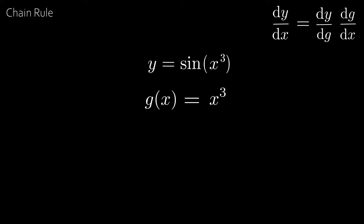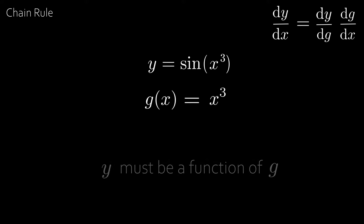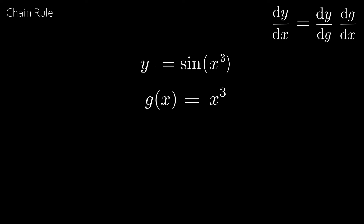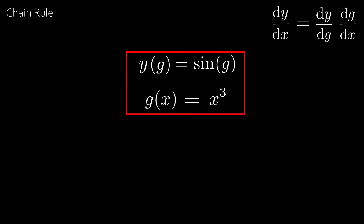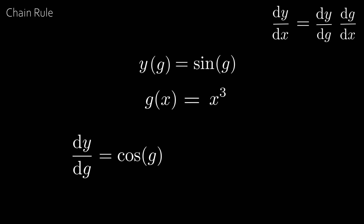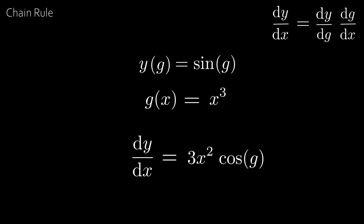In the rule, we need to find the derivative of y with respect to g. We need y to be a function of g. The correct way of writing it is y of x equals sin x cubed. Since g of x equals x cubed, then y of g is equal to sin g. So dy by dg is equal to cos g, and dg by dx is equal to 3x squared. Multiplying them together, we get dy by dx is equal to 3x squared cosine g. Since g equals x cubed, dy by dx is equal to 3x squared cosine x cubed.